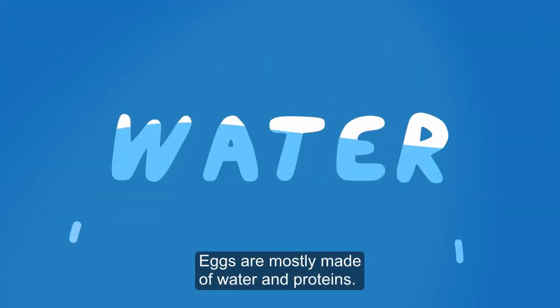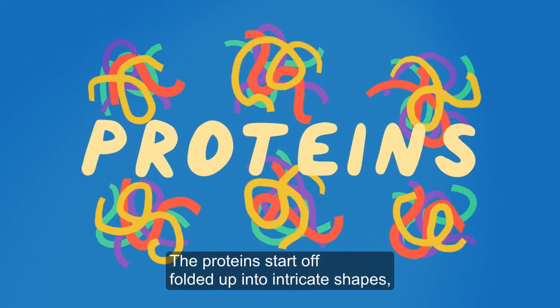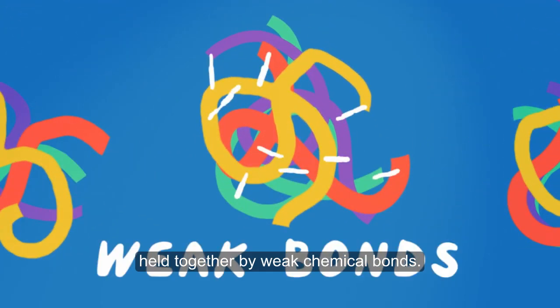Eggs are mostly made of water and proteins. The proteins start off folded up into intricate shapes, held together by weak chemical bonds.